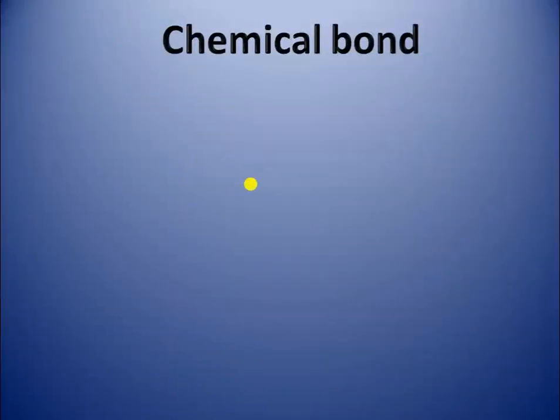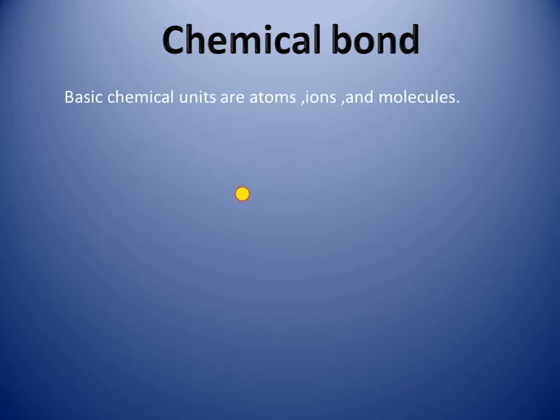In this video we will learn about chemical bonds in the context of organic compounds. The basic chemical units are atoms, ions, and molecules. They are called basic chemical units because chemical substances, elements, and compounds are assemblies of either molecules, atoms, or ions.